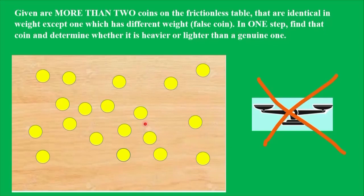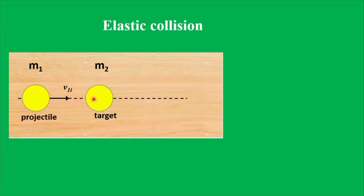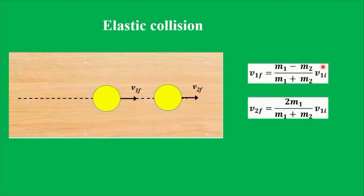Let's suppose we have two objects — in our case, two coins — with masses M1 and M2. One of them is at rest; we will call this coin the target. Another one moves toward the target; we will call this coin the projectile. The projectile hits the target and they move with velocities V1 final and V2 final. These velocities can be calculated using equations found in any textbook on mechanics. The velocity V1F depends on the difference between the masses of these coins.